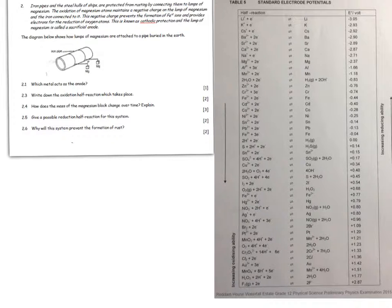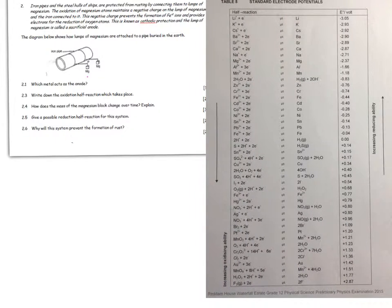What metal acts as the anode? It's a sacrificial anode—they've told you it's magnesium. If you take a look at what happens, magnesium will go backwards and the iron goes forwards, so magnesium is the anode and iron is the cathode.